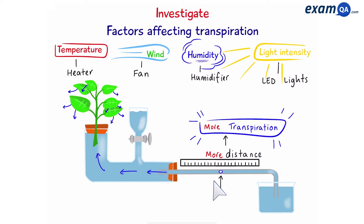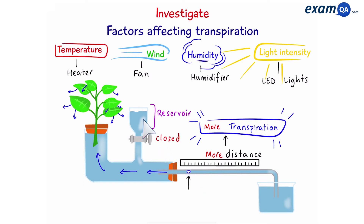You're going to notice the bubble keeps moving — that's fine. All you have to do is record how much it has moved and compare it. When the bubble gets to the end, we don't need to rebuild the apparatus. There is a reservoir with a tap. If we open the tap, water rushes down into the capillary tube and pushes the bubble back to the beginning. Then we can close the tap and restart the experiment.